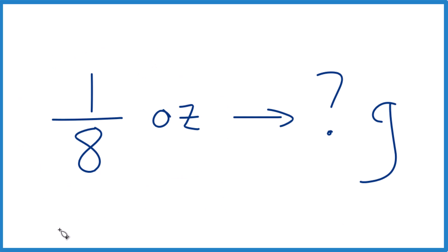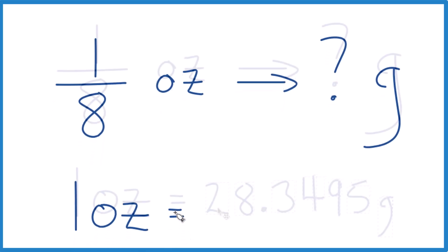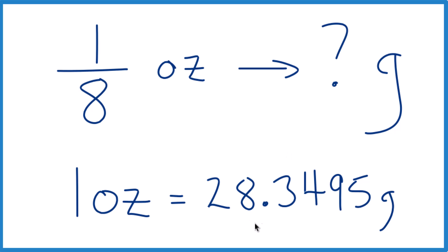So you need to know, first off, that one ounce is going to equal approximately 28.3495 grams. And for our purposes, let's round that to 28.35 grams.